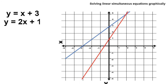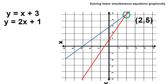So let's now plot the two lines together — y equals x plus 3 and y equals 2x plus 1. What we're looking for is the point at which the two lines cross, giving us a set of coordinates. Those coordinates will give us the values of x and y, therefore solving this simultaneous equation. You can see that the two lines cross at the coordinates 2, 5, where x equals 2 and y equals 5.